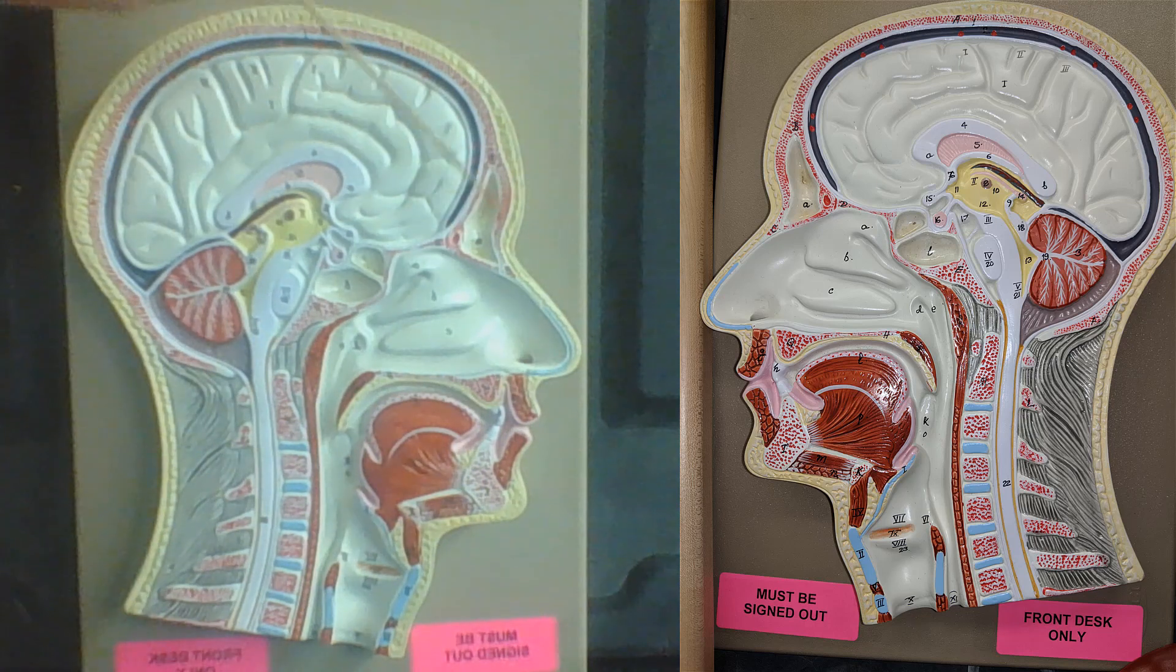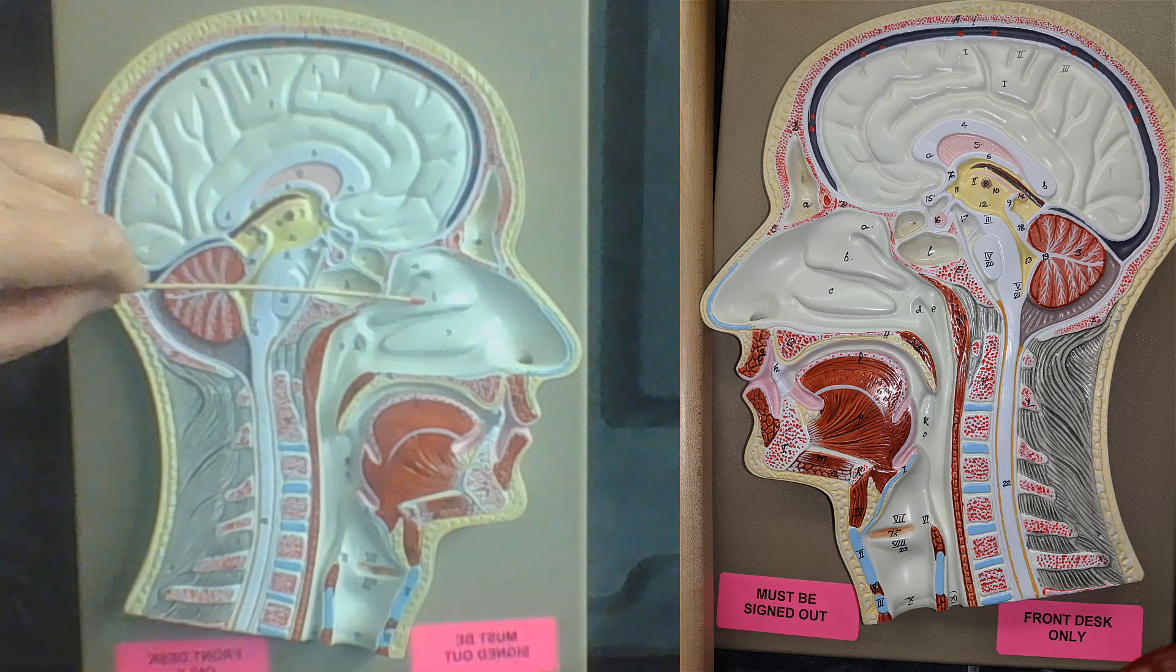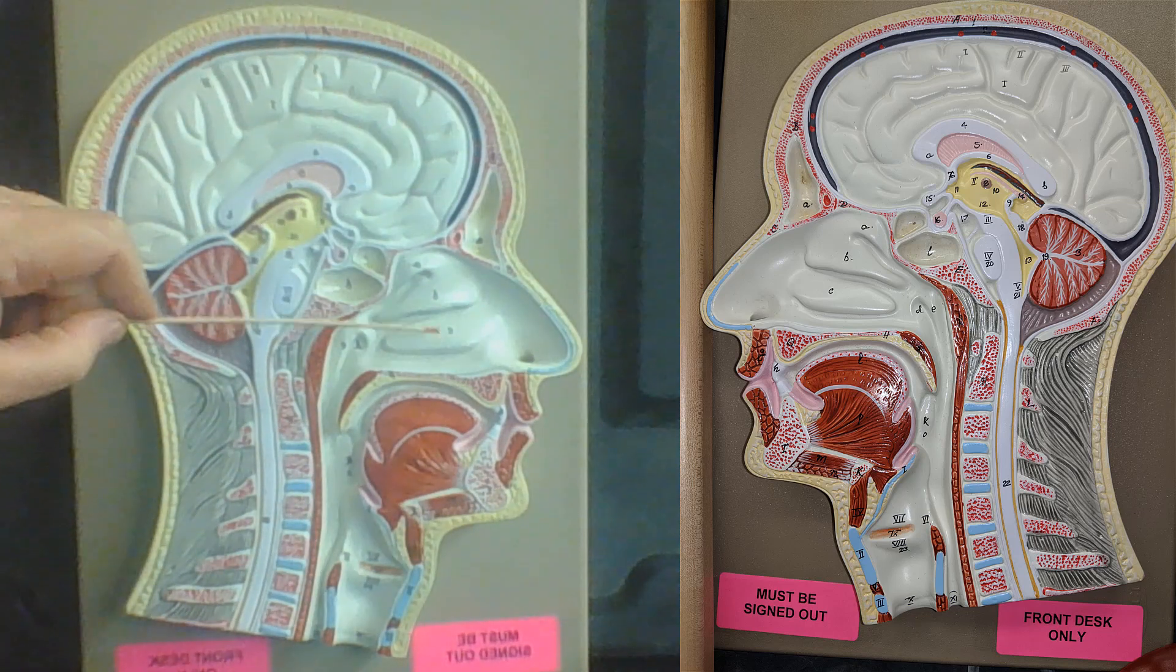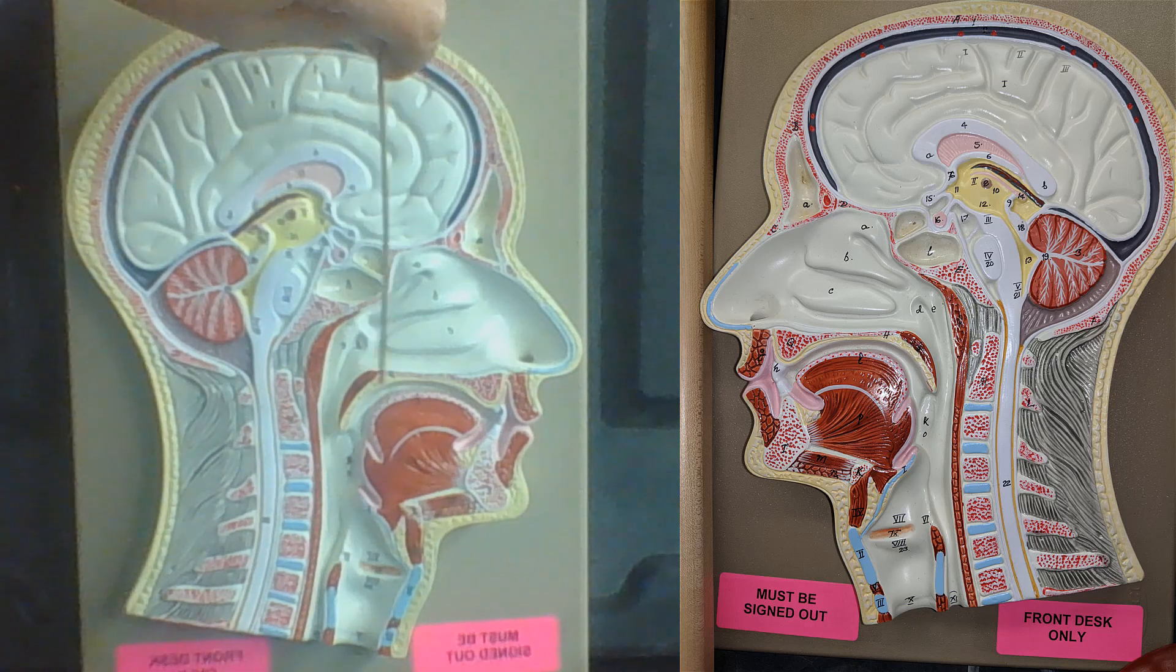This is the frontal sinus. These are the ethmoid sinuses. This entire region here is the nasal cavity. These structures here are the nasal concha. This is the oral cavity. These are the teeth here, these are the lips, this is the tongue.